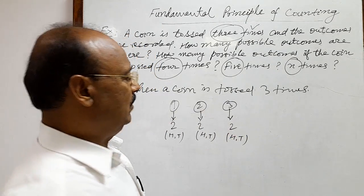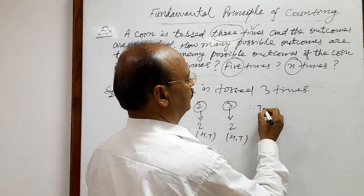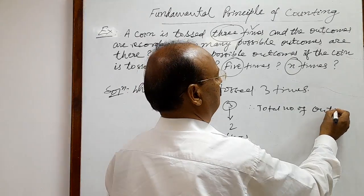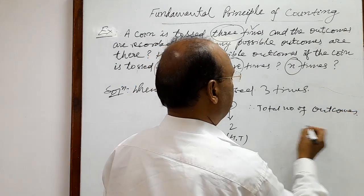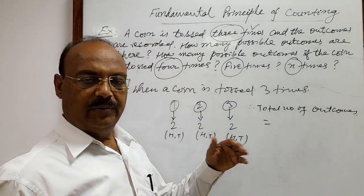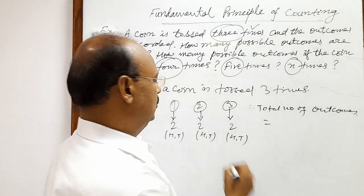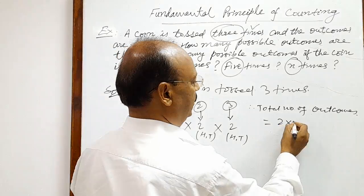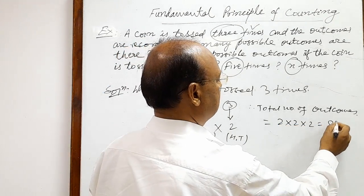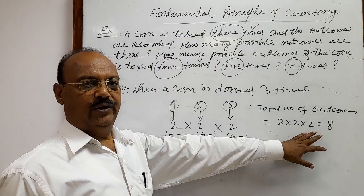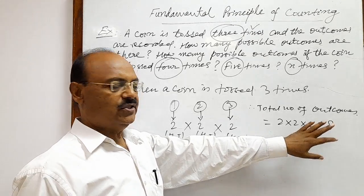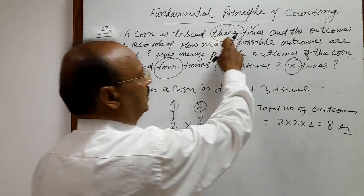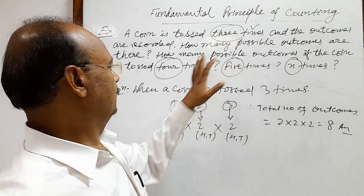So the total number of outcomes will be: by the fundamental principle of counting, this will be two into two into two, which is equal to eight outcomes in total when the coin is tossed three times. This is the answer for the first part.